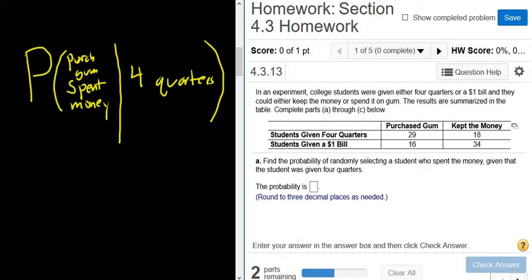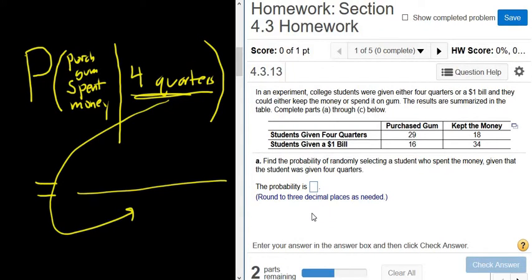So this is a conditional probability. So we have some previous knowledge. We know that the student was given four quarters. So you want to focus only on the people that were given four quarters. So that's what's going to go on the bottom. So this goes on the bottom. So it reduces the total number of possibilities. Instead of adding them all up and getting the total, you just focus on these four quarters. So 29 plus 18, let's work that out. That's going to be 47. And then from these people, just from this top row, you want the ones that spent the money or purchased gum, so 29. So 29 out of 47.